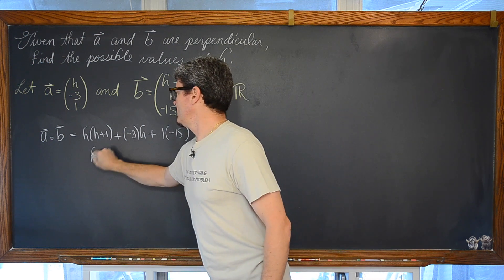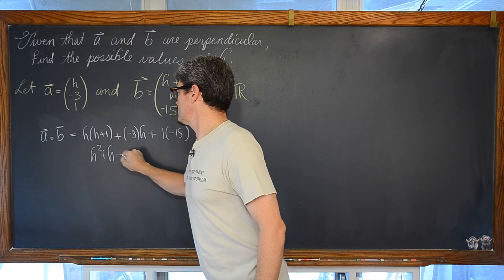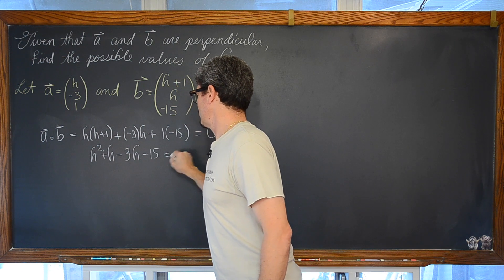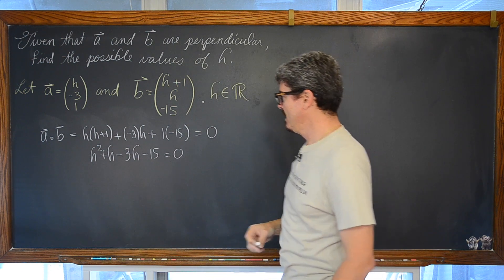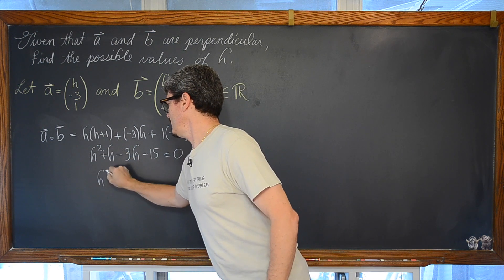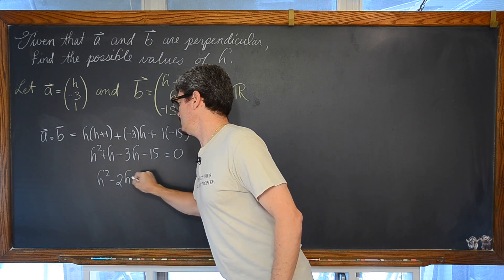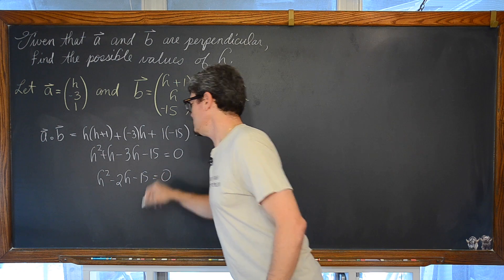So, we have h squared plus h minus 3h minus 15. That, again, needs to be equal to zero. Combine like terms. h squared minus 2h minus 15 is equal to zero.